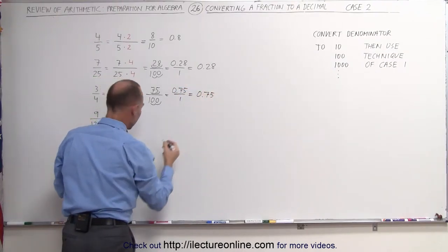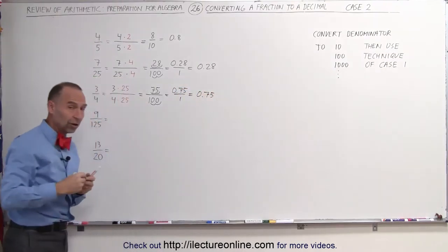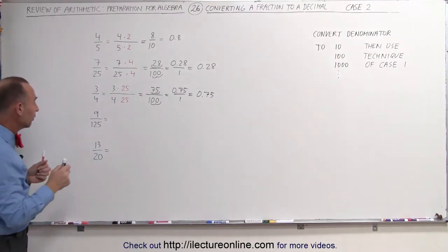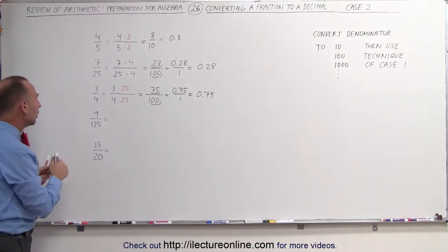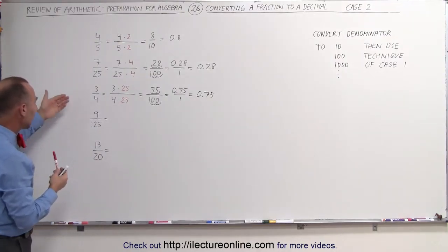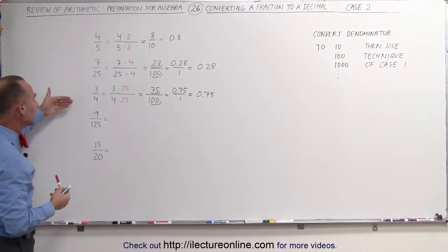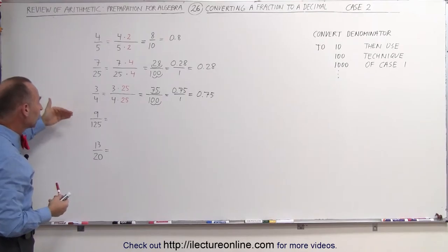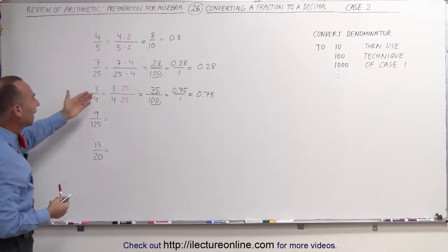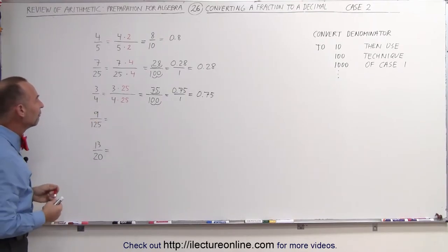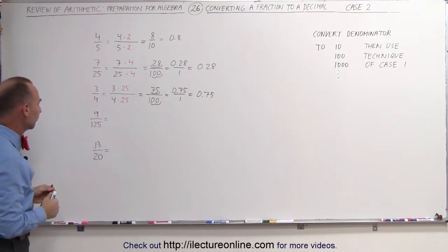So again, the technique is to first convert the fraction to a denominator — either being a 10, 100, or 1000 — and then we can find the proper conversion to the decimal.